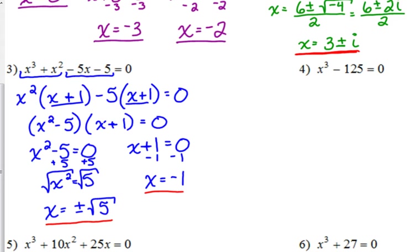Alright, number four. x cubed minus 125 equals 0. What is that? Difference of perfect cubes. That's what we did yesterday as well. So, difference of perfect cubes. Let's see if we remember how this goes. Cube root of x cubed is x. Cube root of 125 is 5. Square the x. Square the 5. Multiply them together. So, same sign is negative. Opposite sign is positive. The last sign is always positive.